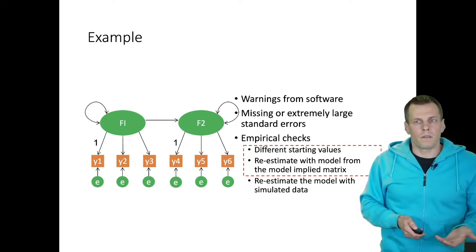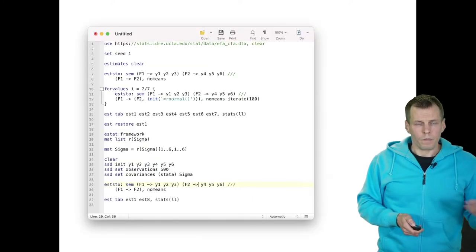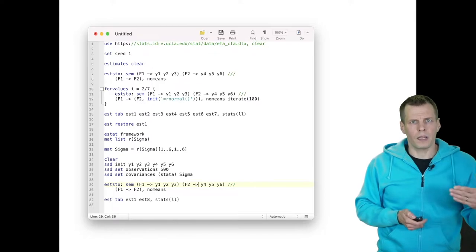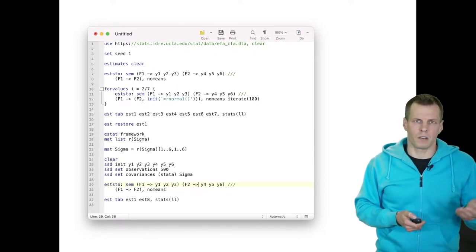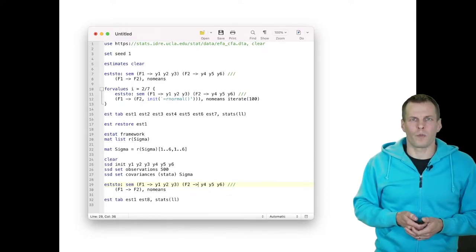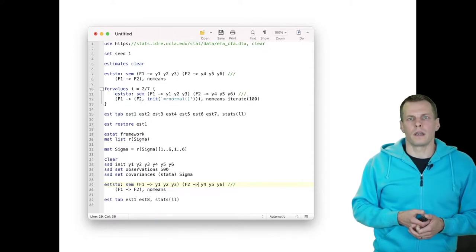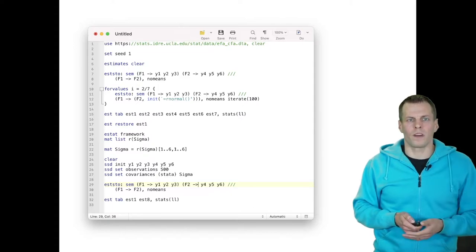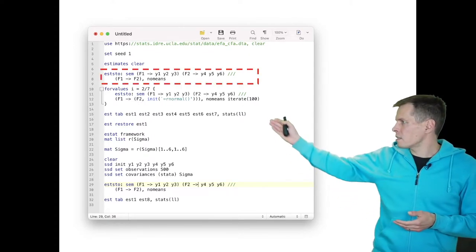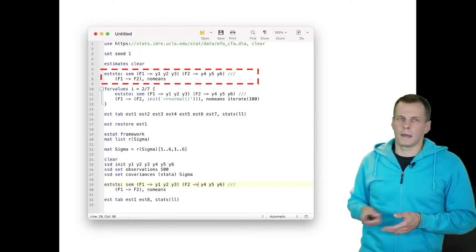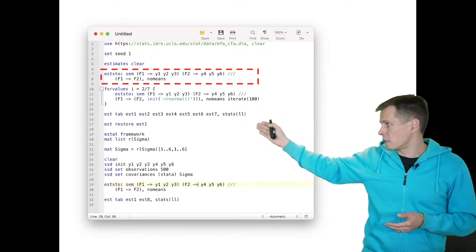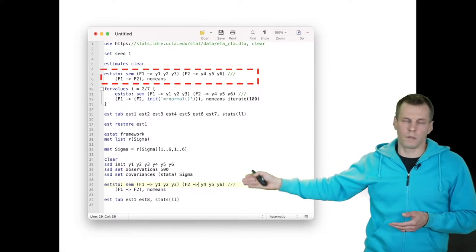You can do different starting values by hand, but you can also do it programmatically. I'll do it programmatically because it's more my style and also then I don't have to think about what would be feasible starting values. So I'll just use random normal variables and this is the original data and then this is the identification check and then this is the check estimated from the model implied covariance matrix.